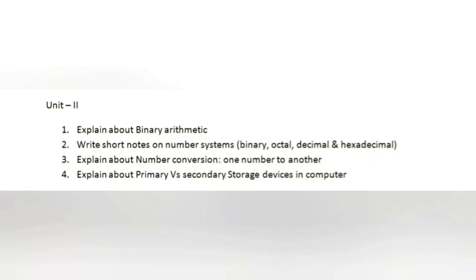First question: explain binary arithmetic — we have to explain binary addition, subtraction, binary multiplication, and binary division. Question number two: short notes about number systems. There are four number systems: binary, octal, decimal, and hexadecimal — we have to explain all of them.